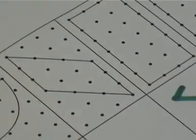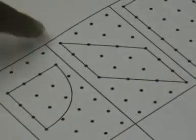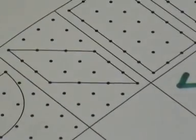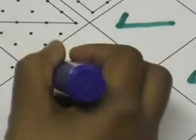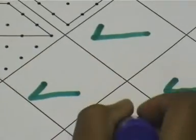This, as you can see, is a parallelogram. It has two acute angles and two obtuse angles. So it is a quadrilateral, but it does not have a right angle.